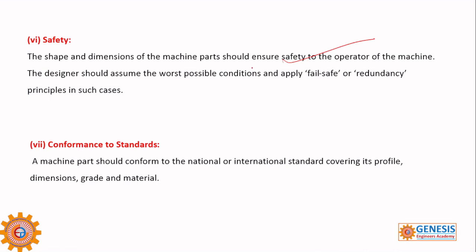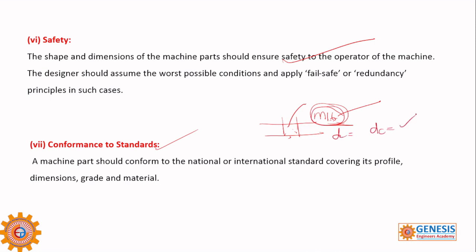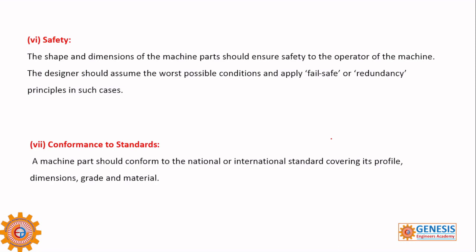Next is conformance to standards. Suppose you have an M16 bolt — if you follow a standard, you will have defined material, grade, and dimensions based on international standards. If you do not follow standards, you will have a bolt failure. The standard is very simple — with international standards, you achieve interchangeability. If you have interchangeability, it avoids a monopoly on parts.